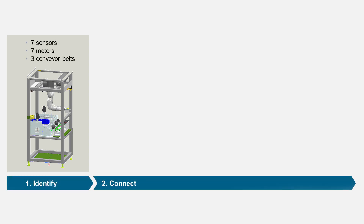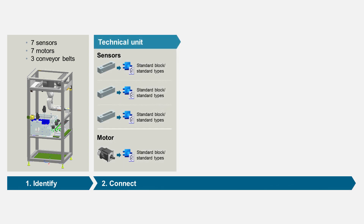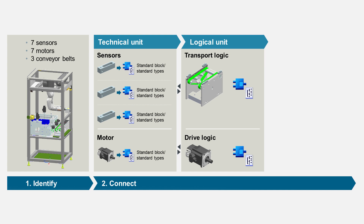You initially standardize tasks in your projects. But what exactly does standardize mean? Let's take a very simple example: a transport unit. It consists of several components, including motors, sensors and conveyor belts. A standard module can be created for each of these technical units. If the sensor and conveyor belt are now combined, they form a logical unit for which a standard module can also be created.